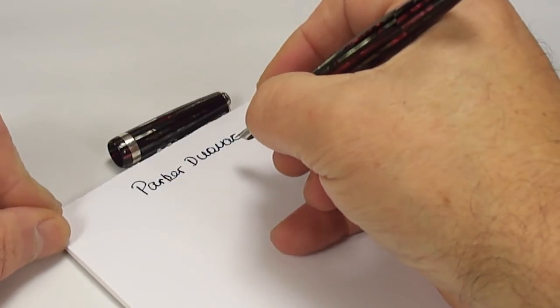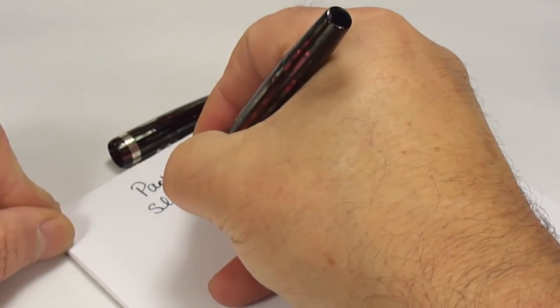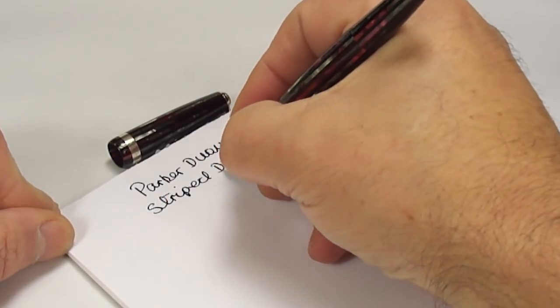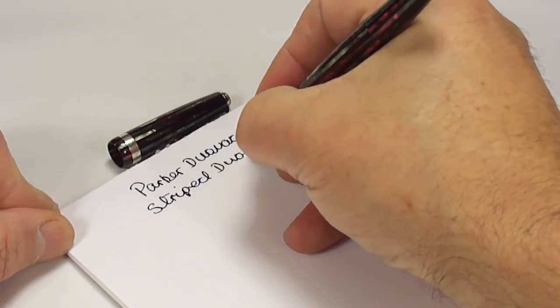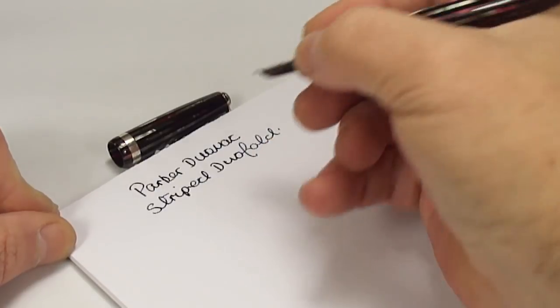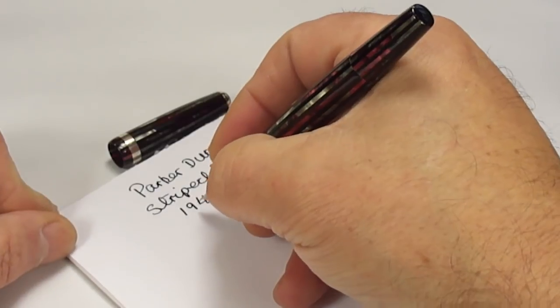So what we have is a Parker Duovac, or some people will call it the striped Duofold.